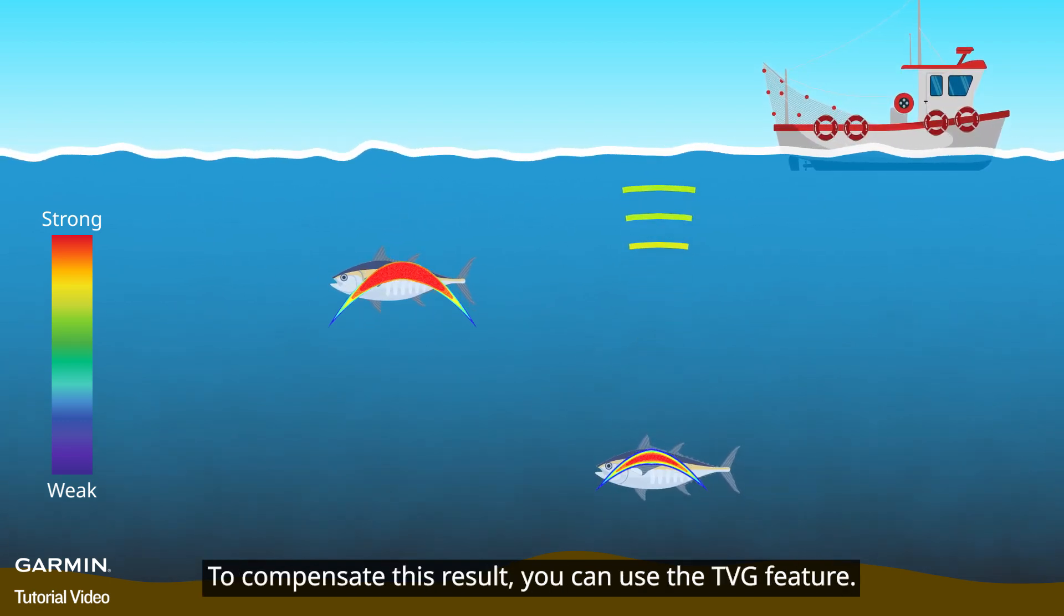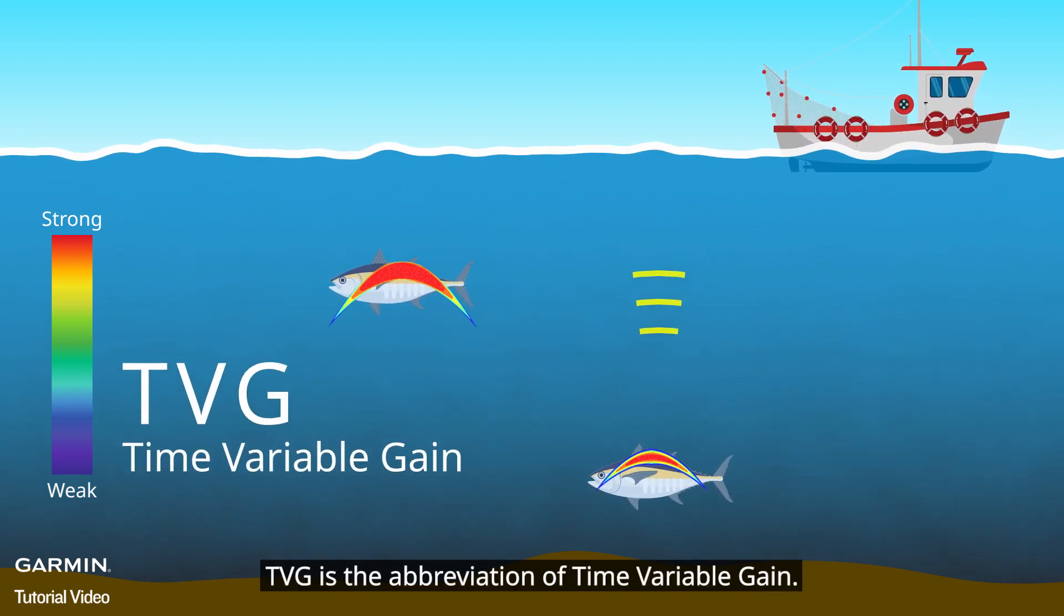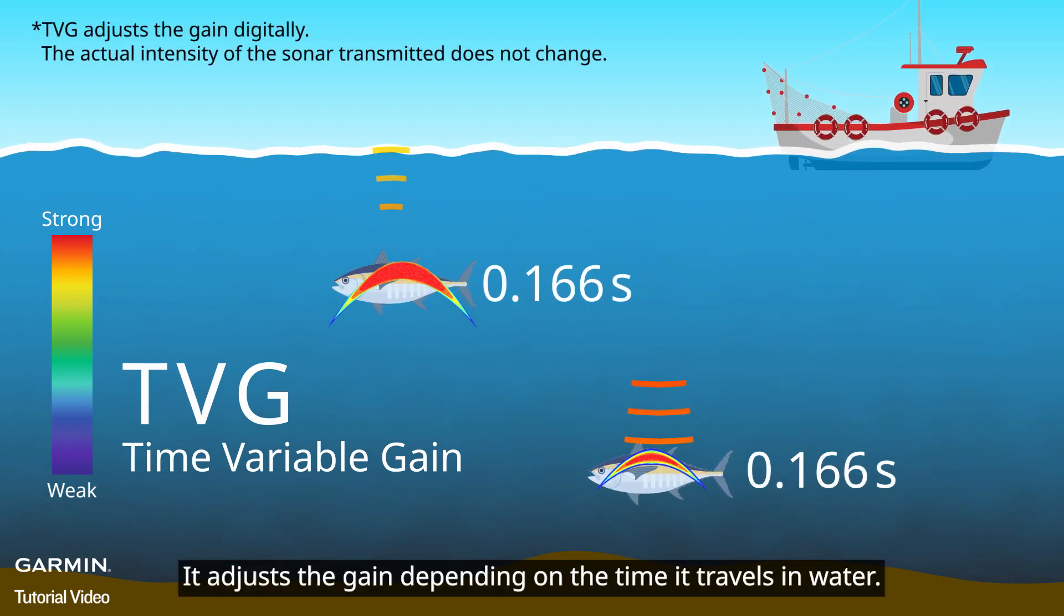To compensate this result, you can use the TVG feature. TVG is the abbreviation of time variable gain. It adjusts the gain depending on the time it travels in water.